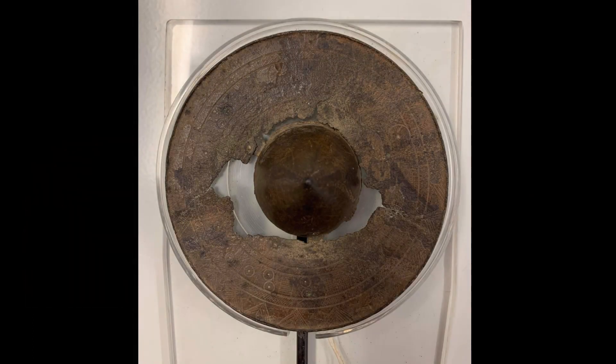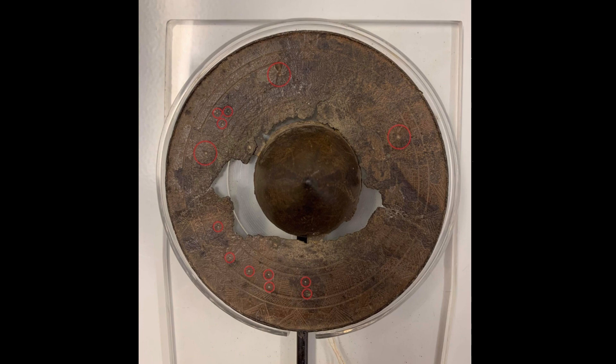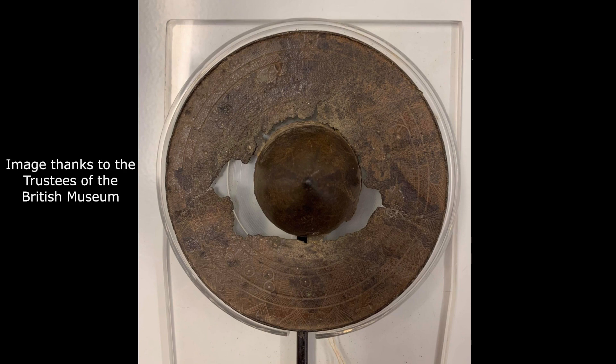However, this example has a unique additional motif of circles or dots of multiple sizes distributed in an irregular pattern that may suggest the depiction of astronomical objects. This was brought to my attention by Neil Burridge, a master craftsman in Bronze Age metalworking, and he shared this image thanks to the trustees of the British Museum, where the pin is now housed.